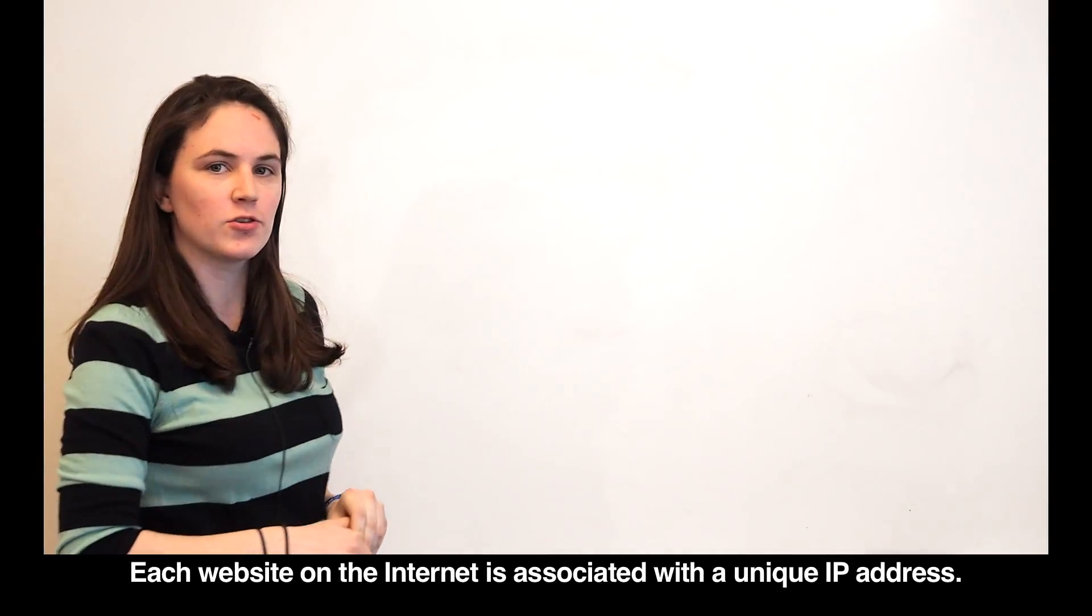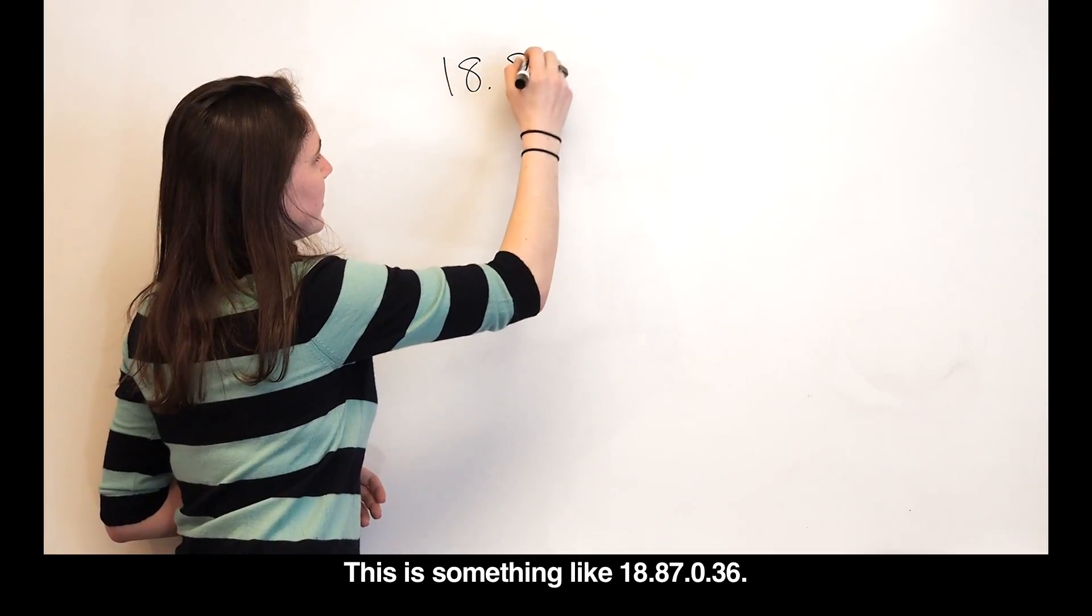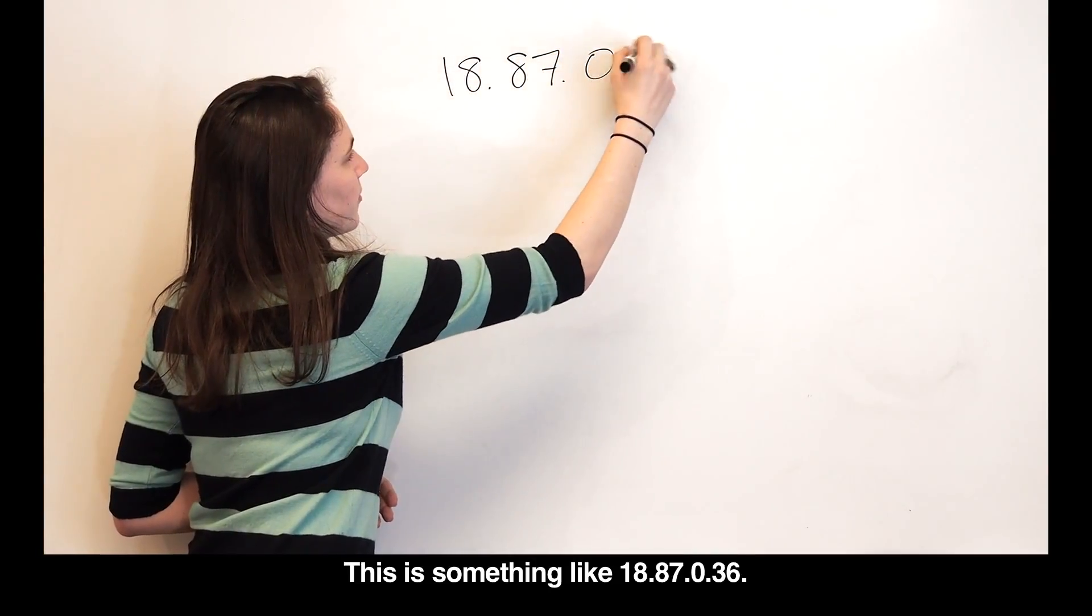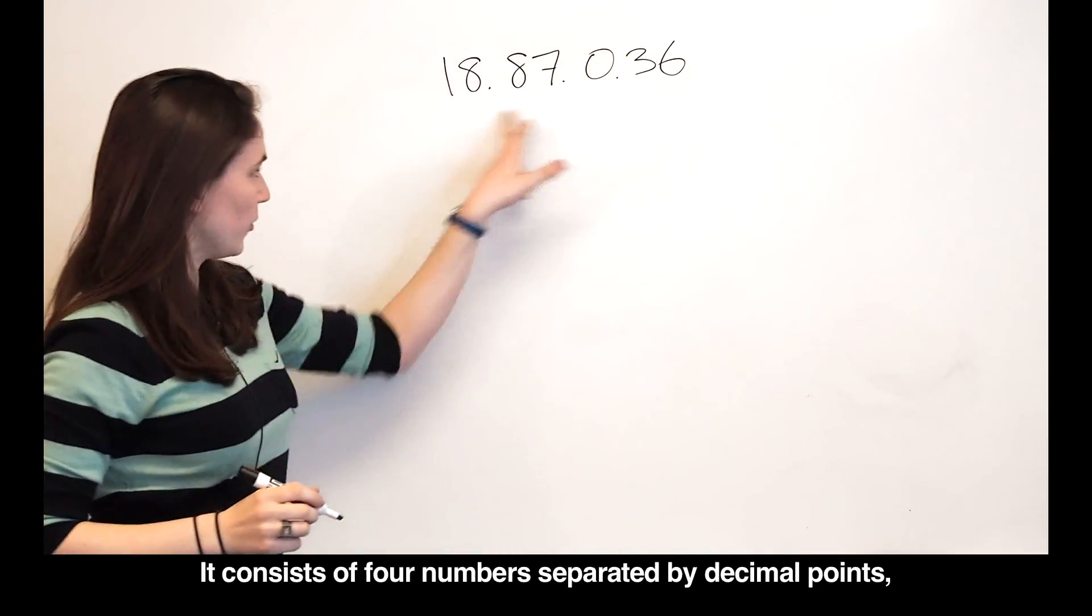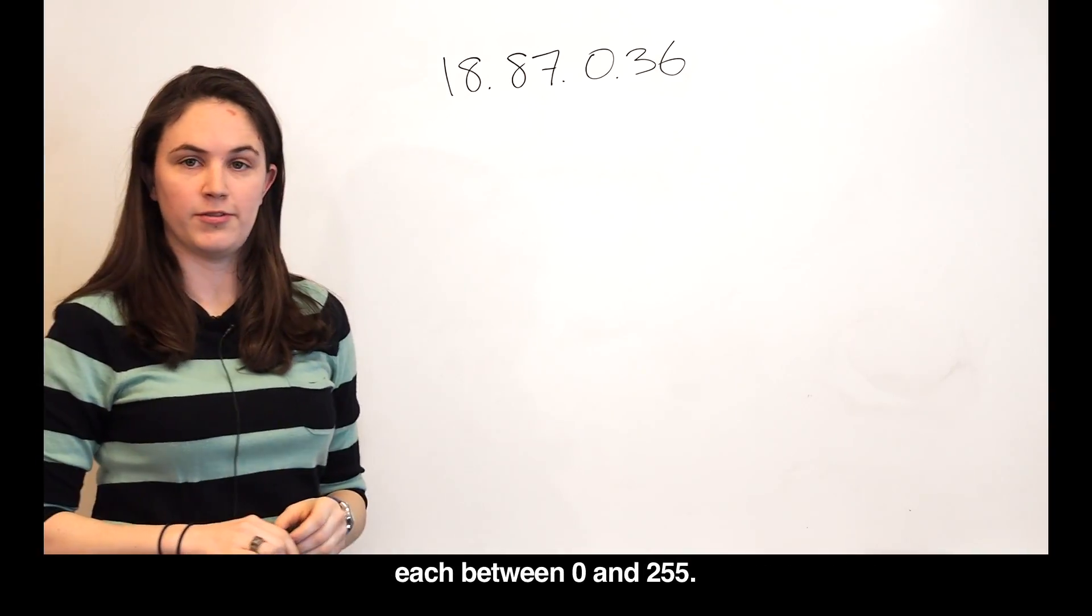Each website on the internet is associated with a unique IP address. This is something like 18.87.036. It consists of four numbers separated by decimal points, each between 0 and 255.